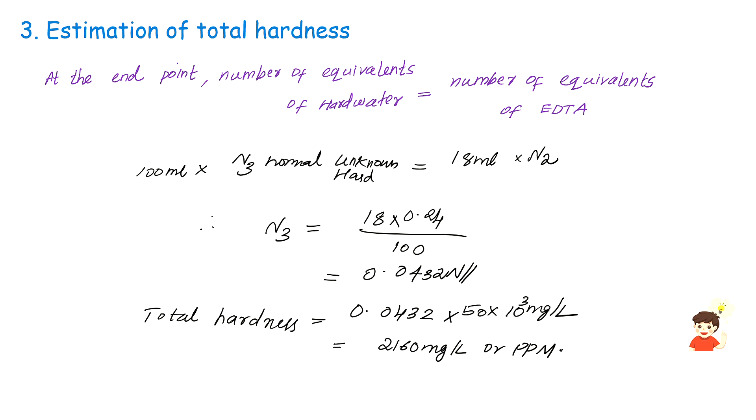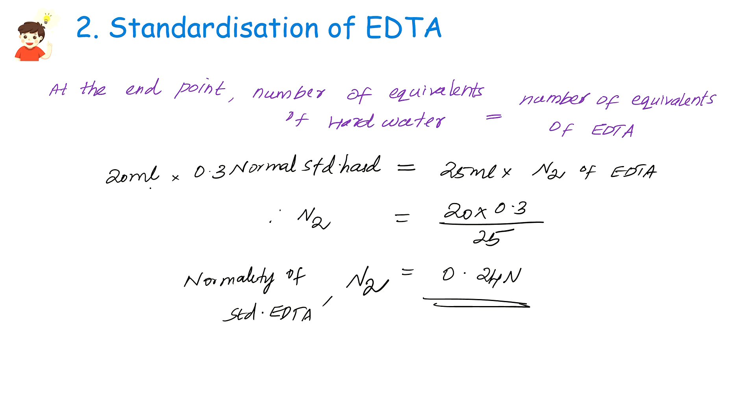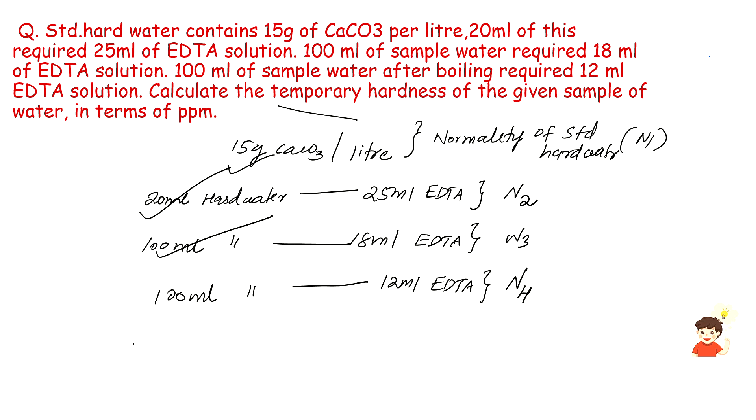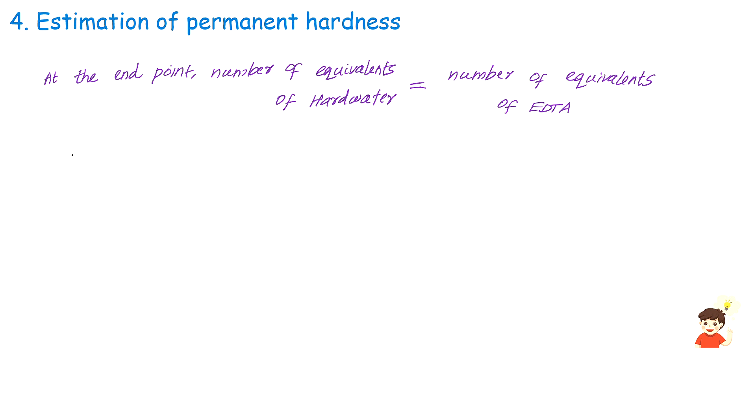Next step is estimation of permanent hardness. This stage is simple. Now let's use the value 100ml and 12ml. 100ml unknown hard water, and that is N4 normal unknown hard water.